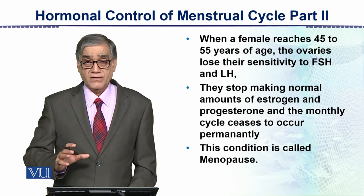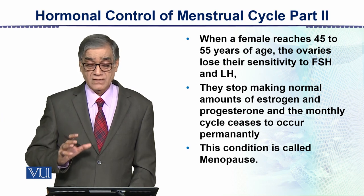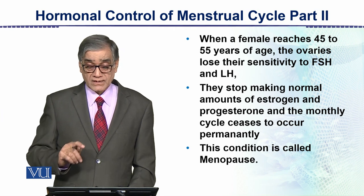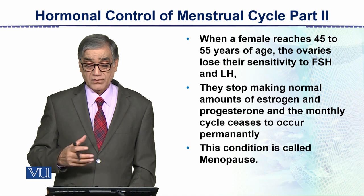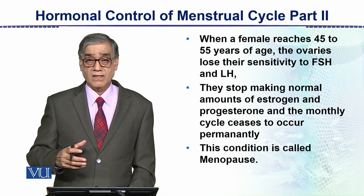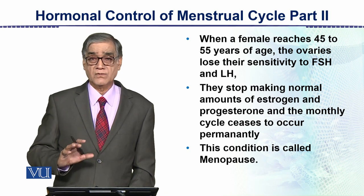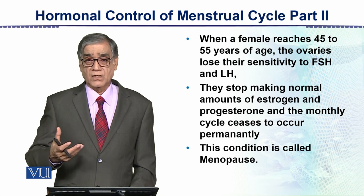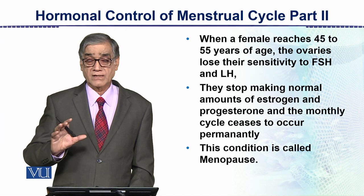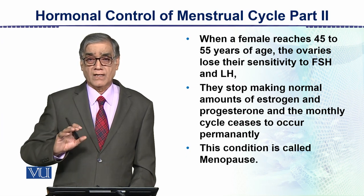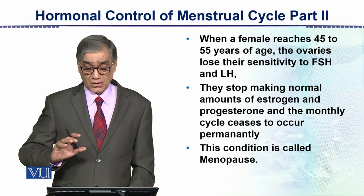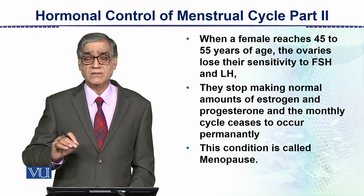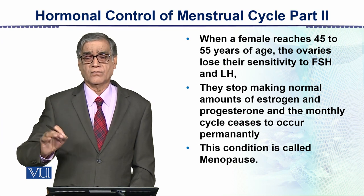When a female reaches about 45 to 55 years of age, the ovaries lose their sensitivity to FSH and LH. This stops the normal production of estrogen and progesterone and the menstrual cycle ceases to occur permanently. At around age 45, women can no longer reproduce because the reproductive cycle stops, and this condition is called menopause, which extends till death.